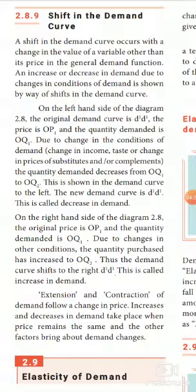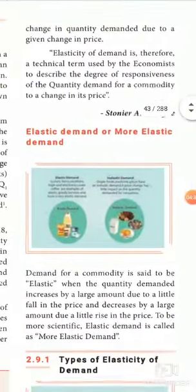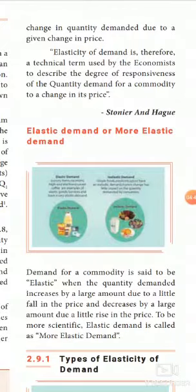When price of substitutes, income of the consumer, and taste and preference of the consumer factors change, price and demand change — this is extension and contraction of demand. Elasticity of demand is a technical term used by economists to describe the degree of responsiveness of the quantity demanded for a commodity to a change in its price. If the price decreases, demand increases — that is called extension. If the price increases, demand decreases — that is contraction of demand.